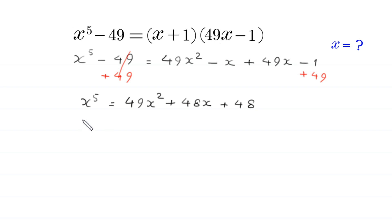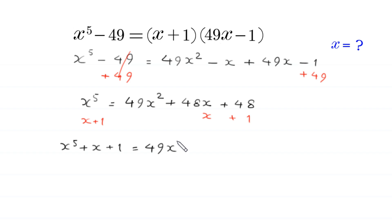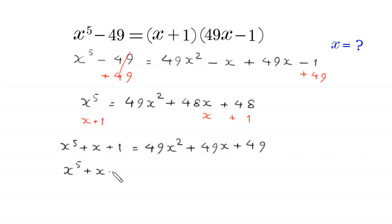Now we add x plus 1 to both sides. So on the left hand side, x to the power 5 plus x plus 1 is equal to 49x squared plus 48x plus 49x. From the three terms on the right, we can factor out 49 and in the bracket we are left with x squared plus x plus 1.